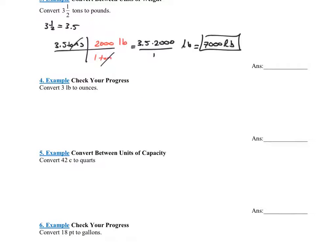The next one says convert three pounds to ounces. Start off with what you're given: three pounds. By the way, LB stands for pounds. What's our conversion rate? We know that one pound is the same thing as 16 ounces. This would be three times 16 over one ounces. Three times 16 over one is 48 ounces.